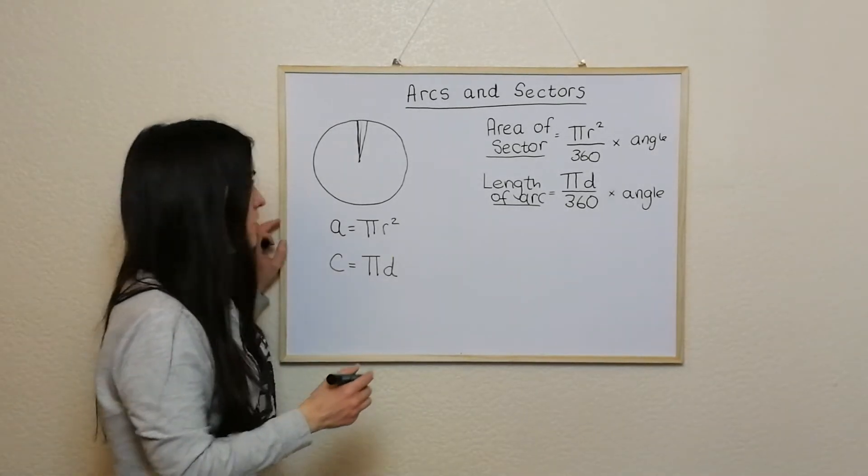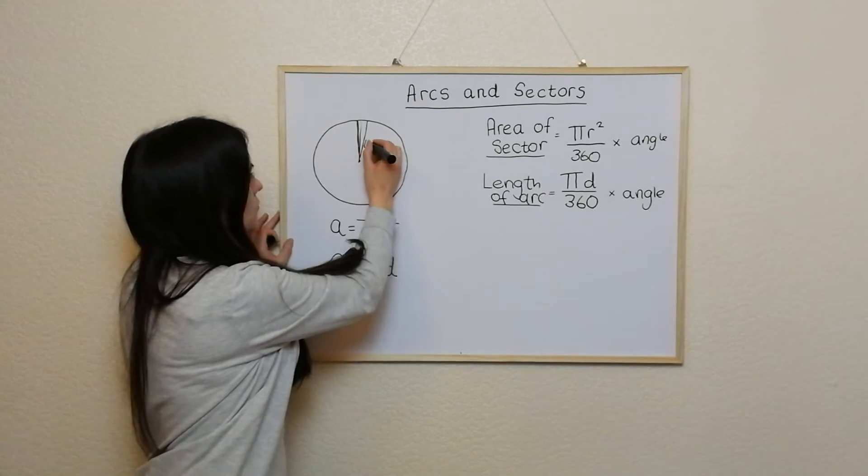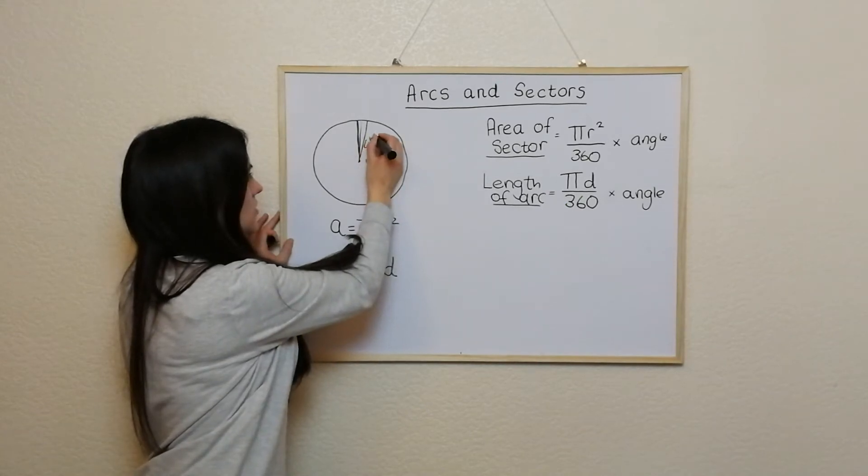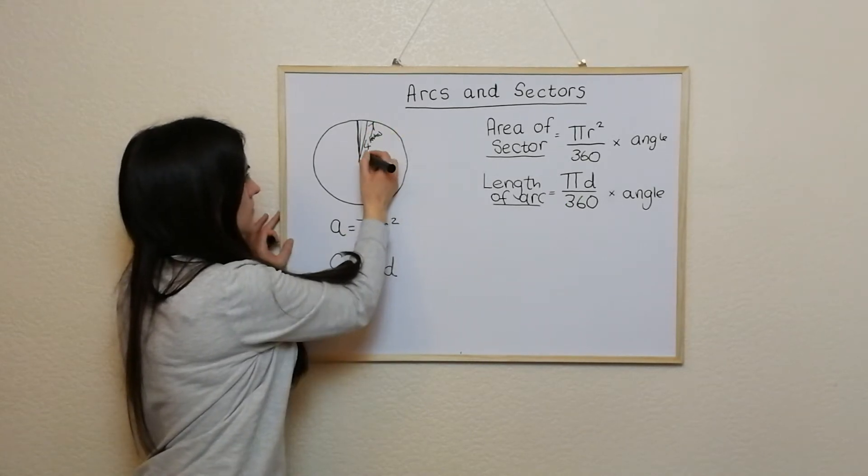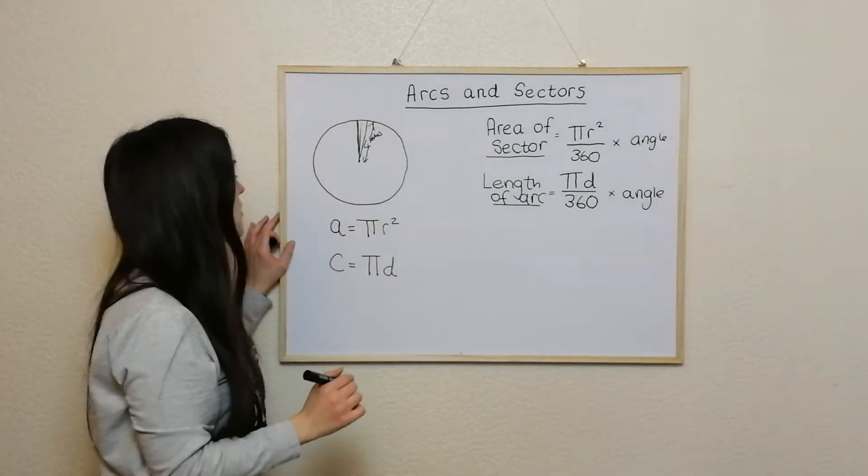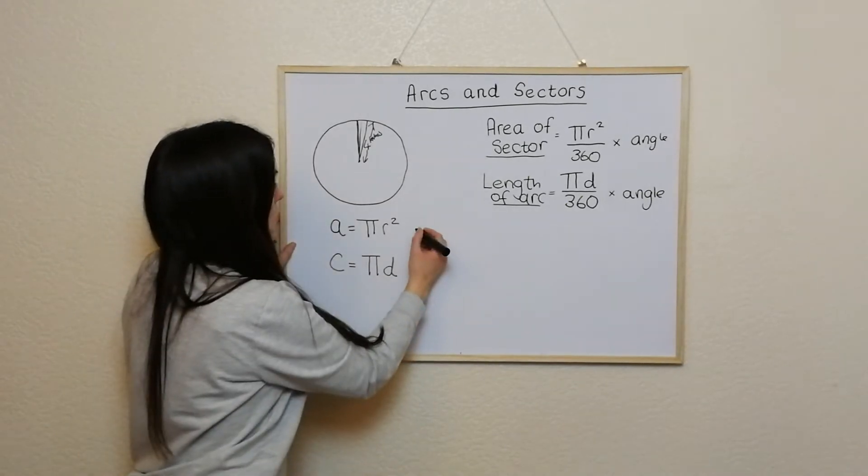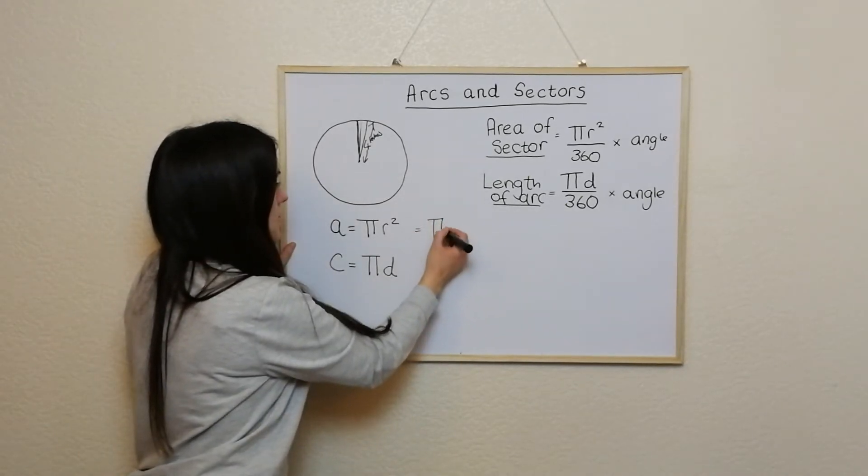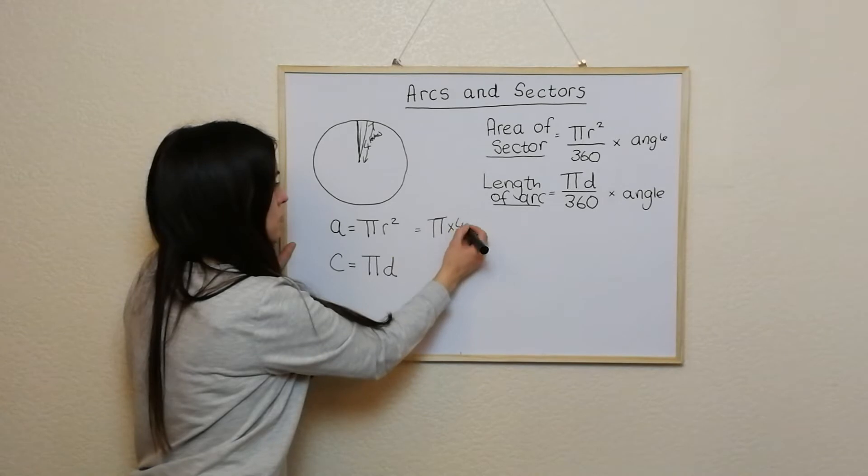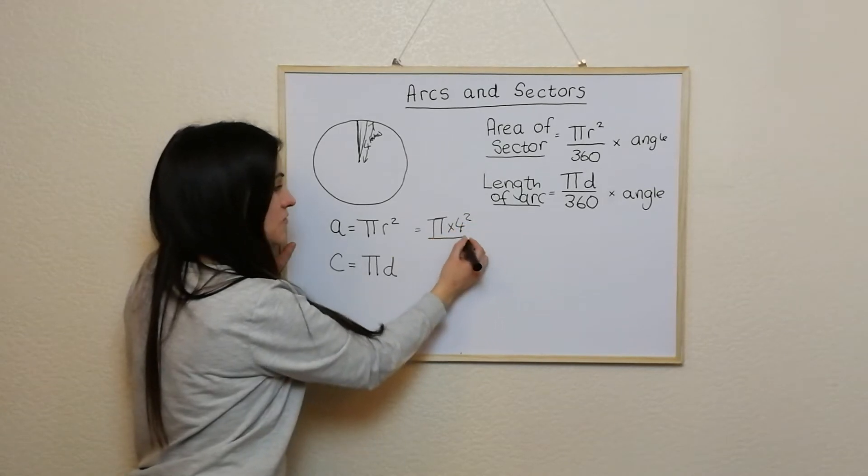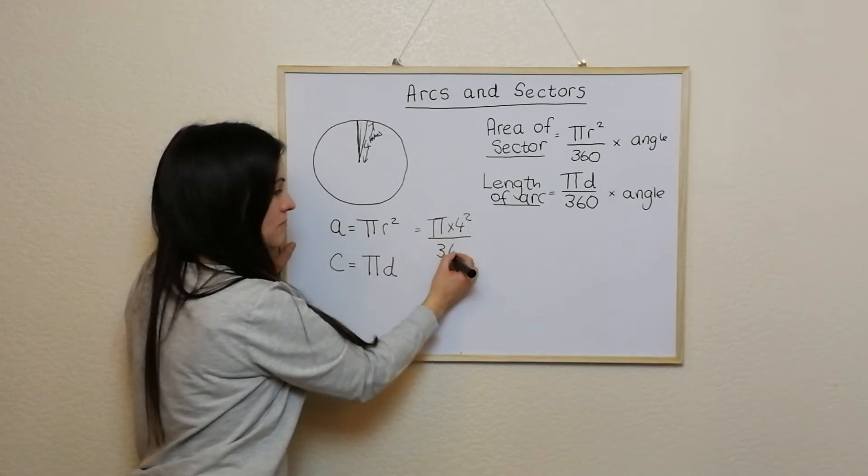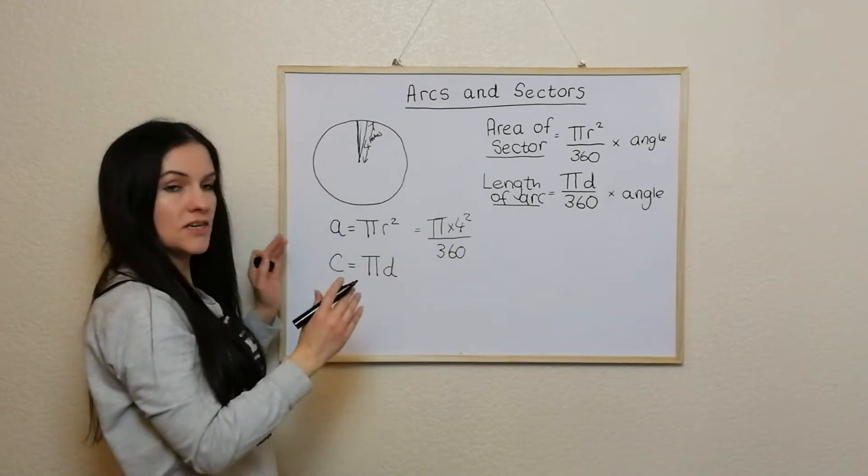Say for instance that this was 4 inches here, so I suppose it would be like an 8 inch pizza, and I wanted to know the size of one degree. So what I would be doing would be pi times 4 squared and then dividing it by 360 just to get the size of one degree.